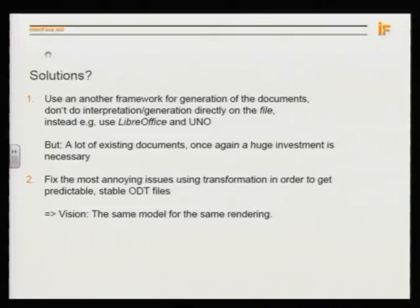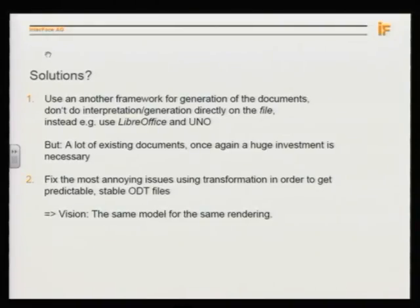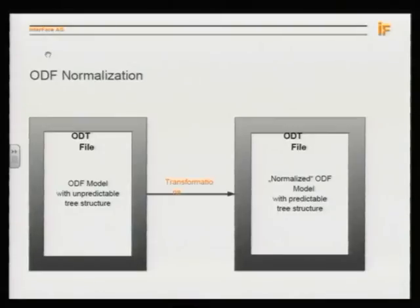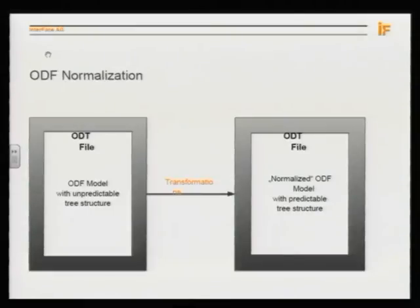There are different possible solutions. For example, you could say: throw FreeMarker away — but that's a huge investment. The second possible solution is to fix the most annoying issues, and this is what I call normalization. You take an ODT file with an unpredictable tree structure, apply some transformations, and get a normalized structure that you can use for automatic processing and comparison.